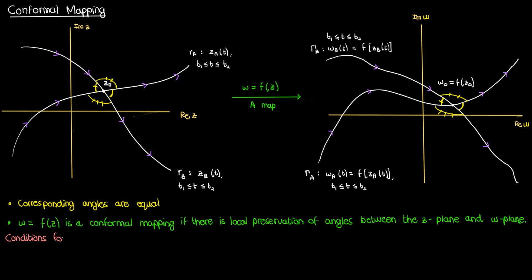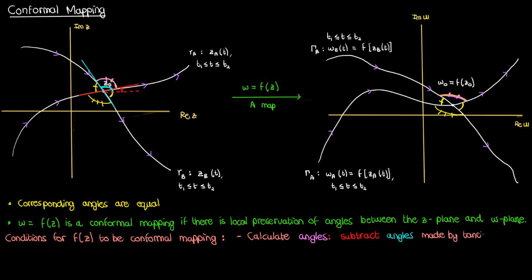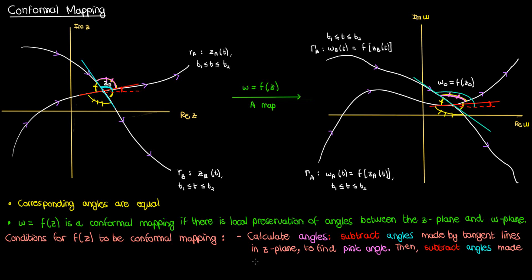In this video I'm going to come up with some conditions for f of z to be a conformal mapping, and to come up with those conditions I'll need to calculate these two angles. I can draw a tangent line here for gamma a and another one here for gamma b. Then I can subtract the angle that this tangent line makes from the angle that this tangent line makes. When I do that subtraction I can calculate this pink angle between the curves gamma a and gamma b. And then I can do the same in the w-plane — find the tangent line to capital gamma a at w naught, find the tangent line to capital gamma b and subtract the angles made by those tangent lines to get the corresponding pink angle in the w-plane.